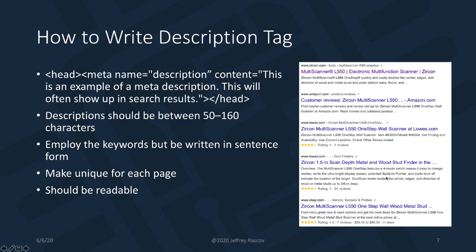Some descriptions have more — look at Lowe's, which has a whole bunch. I'm not sure why Google sometimes allows more or less — it just depends. Make sure the keywords are written in sentence form so that people can read the description — it should be readable and not just a bunch of keywords stuffed together. Make each description unique for each page, and again it should be readable.